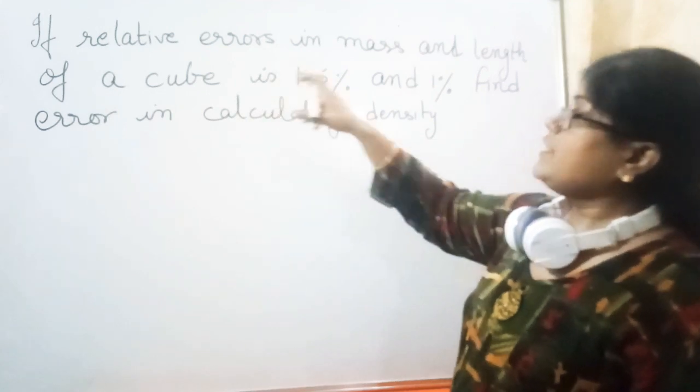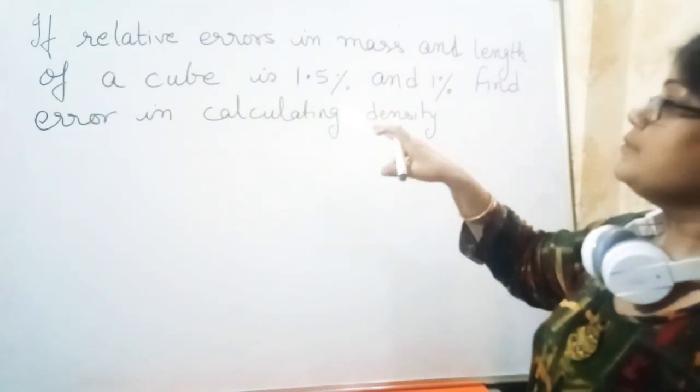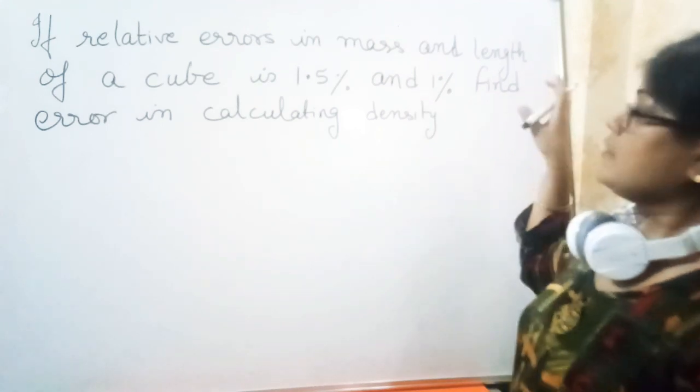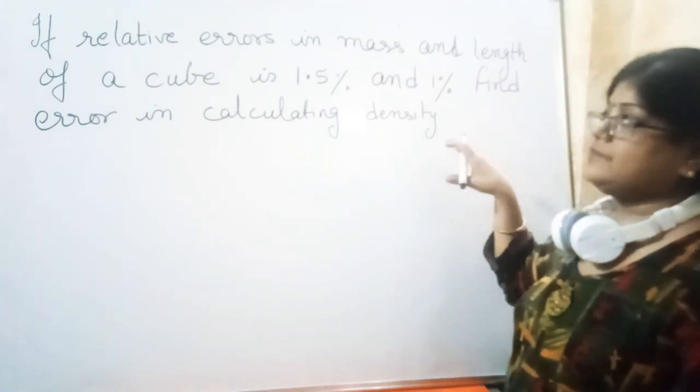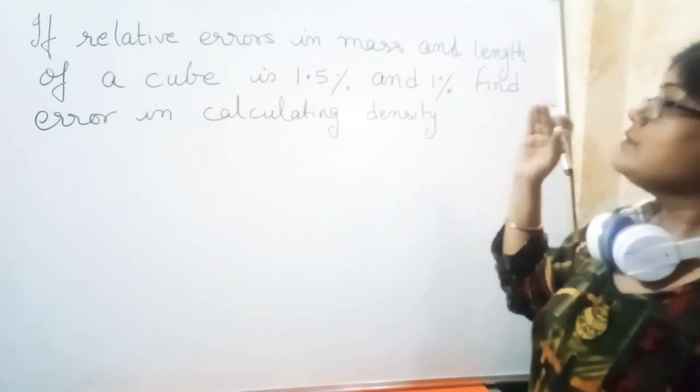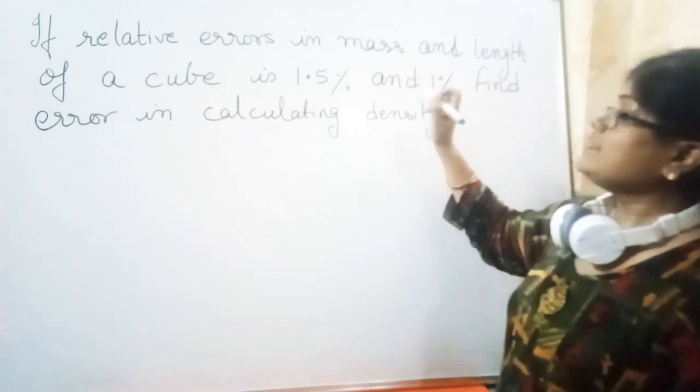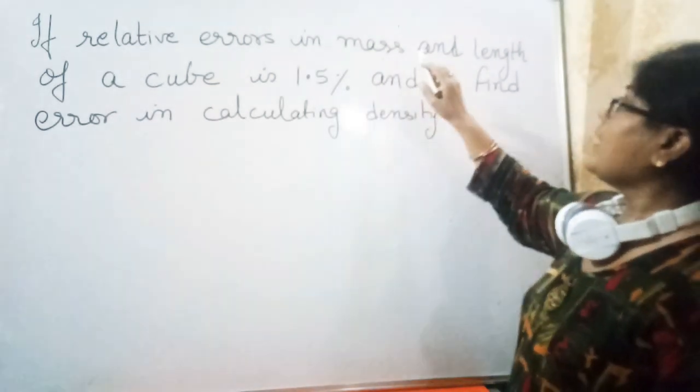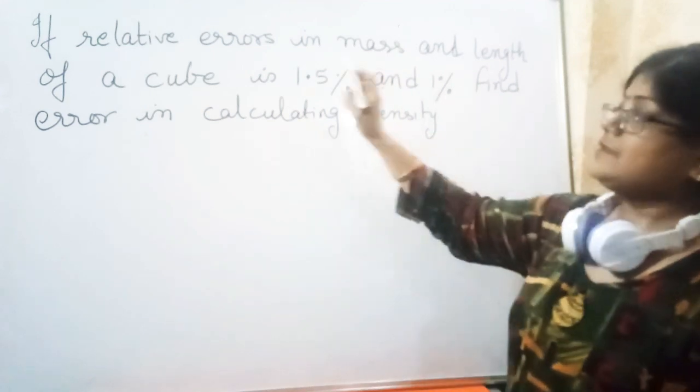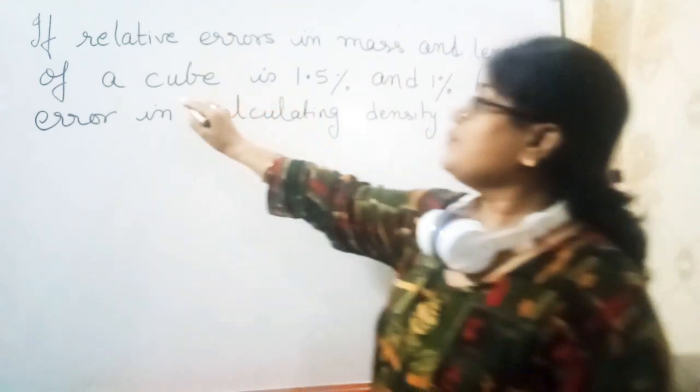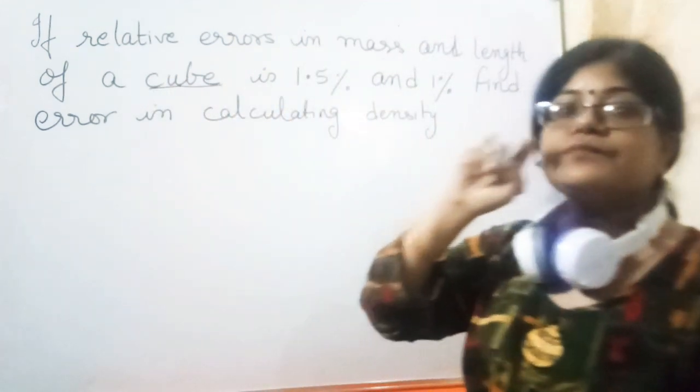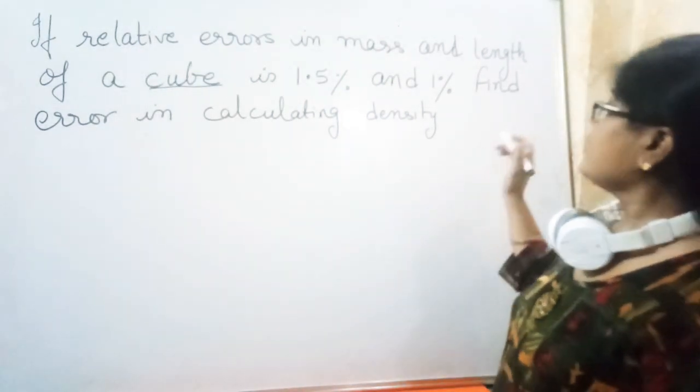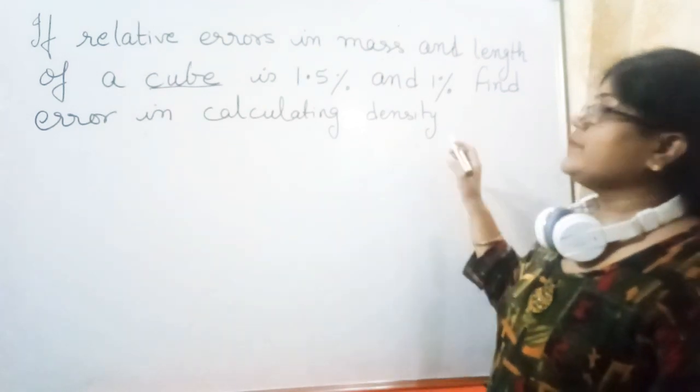First question: if relative errors in the mass and length of a cube are 1.5% and 1%, find the error in calculating the density. Just see again - error in mass is 1.5%, error in length is 1%, and the object is a cube, meaning length, breadth, and height are all equal.